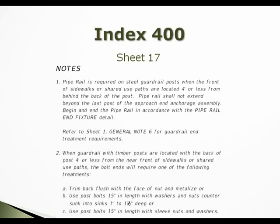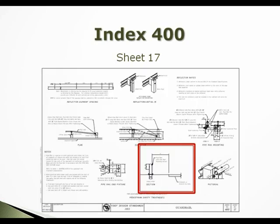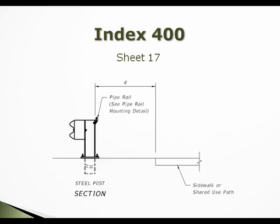Note 2 stayed the same. Note 3 was renumbered to note 2, and the renumbered note was revised for clarity. We deleted dimensions based on proprietary products. This is a sample of what the section detail looks like now — it better clarifies that the 4-foot distance is measured from the back of the post to the front of the sidewalk or the shared-use path.